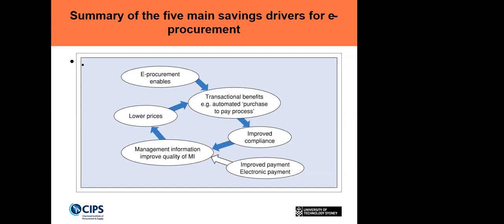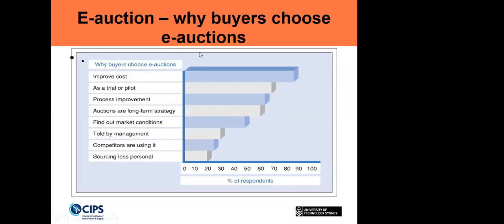Reasons why buyers use electronic auctions include: improved cost as a trial or pilot project to get feedback on how it works, processing improvement, and using auction as a long-term strategy. There are many reasons — these are all self-explanatory — why organizations use electronic auctions.